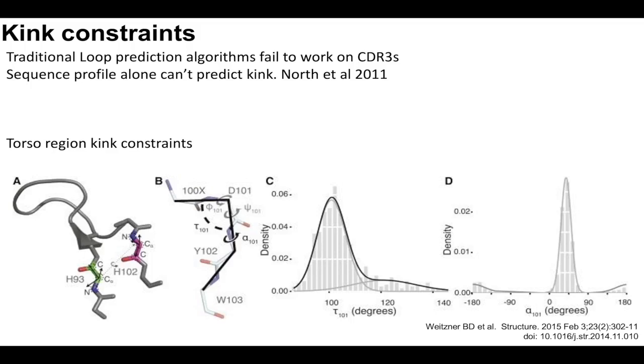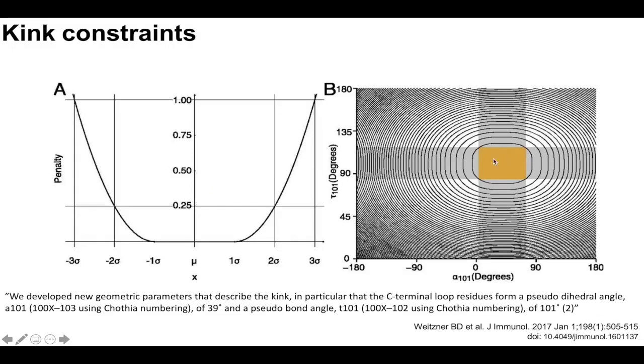And so in order to solve this issue, there was another paper in which they introduced kink constraints, which basically bias the loop building algorithm to recover kinked conformations. And this contour plot here describes it pretty well. They basically have two angles that they talk about. There's tau 101 and alpha 101. So tau 101 is the pseudobond angle of the last three residues, and alpha is the pseudodihedral angle of the last four residues in the CDR3.